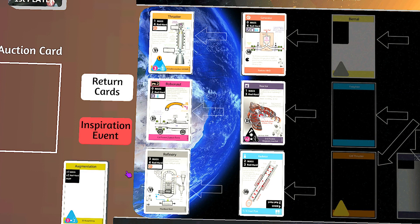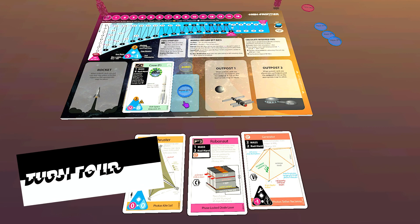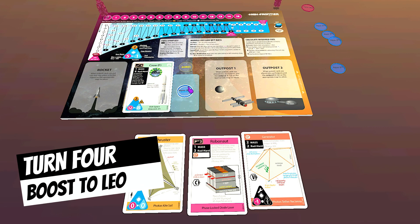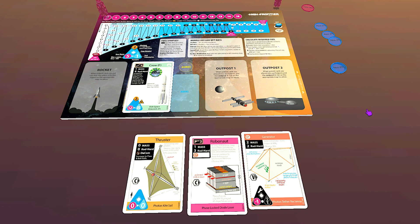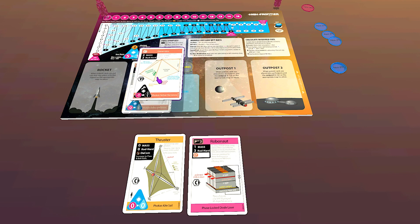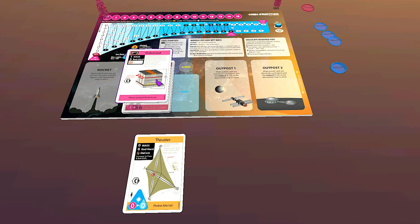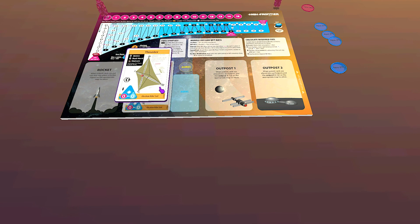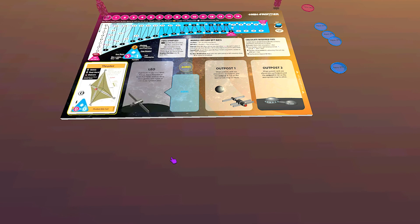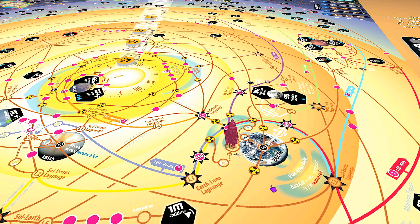For my next turn I pay to boost my generator, my robonaut, and my thruster into low Earth orbit to hang out with my crew. But not for long—we do a cargo transfer and create my rocket.